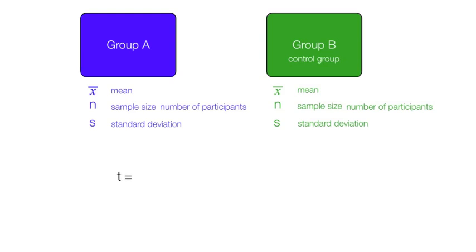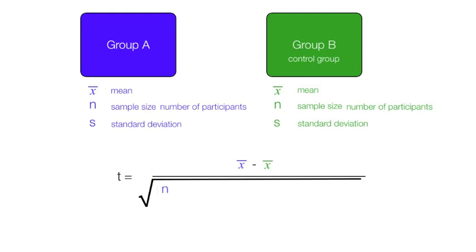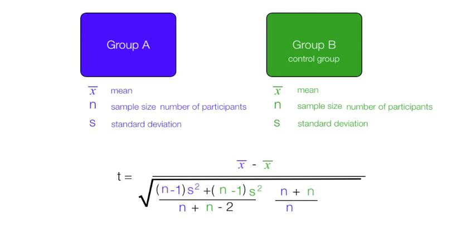We take the mean of group A minus the mean of group B — the experimental group minus the control group — divided by the square root of: n of the experiment group minus 1, times the standard deviation squared, plus the sample size of the control group minus 1 times the standard deviation squared, all divided by n plus n minus 2, times n plus n, divided by n times n.